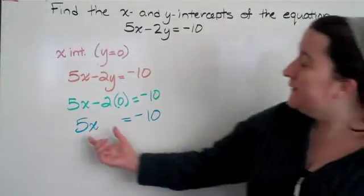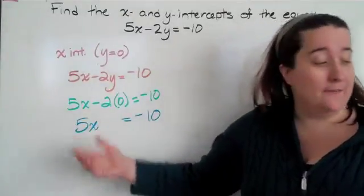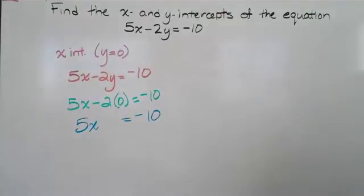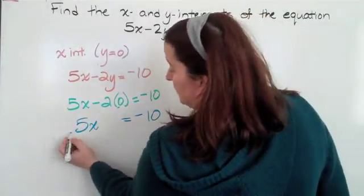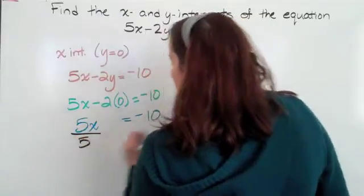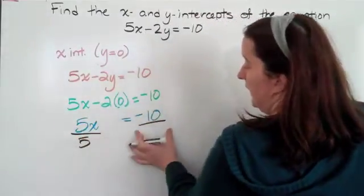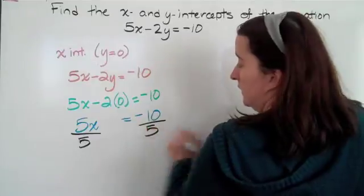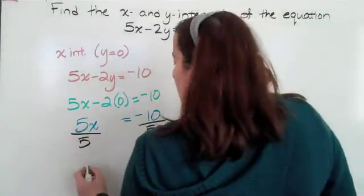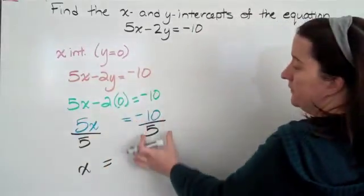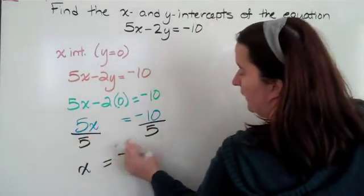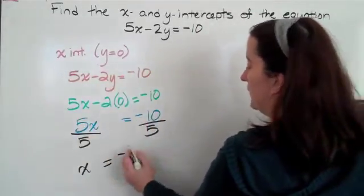So to get the x completely by itself, I have to get rid of that 5. To get rid of that 5, I'm going to divide. It's 5 times x, so the opposite of multiplication is division. So I'm going to divide by 5. Whatever I do to this side, I have to do to this side. 5 divided by 5 is 1, so I just have the x. Equals, a negative divided by a positive is a negative. And 10 divided by 5 is 2.